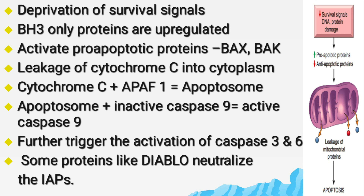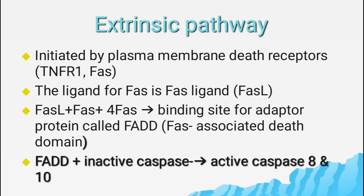Pro-apoptotic proteins enhance mitochondrial membrane permeability, causing loss of the protective function of BCL-2 and leakage of cytochrome c into the cytoplasm. Cytochrome c binds with the protein apoptosis-activating factor 1 and forms the apoptosome, which binds inactive caspase 9 and activates it. Active caspase 9 triggers a cascade activating other pro-caspases such as caspase 3. Proteins like DIABLO or SMAC neutralize inhibitors of apoptosis, which normally block caspase activation.